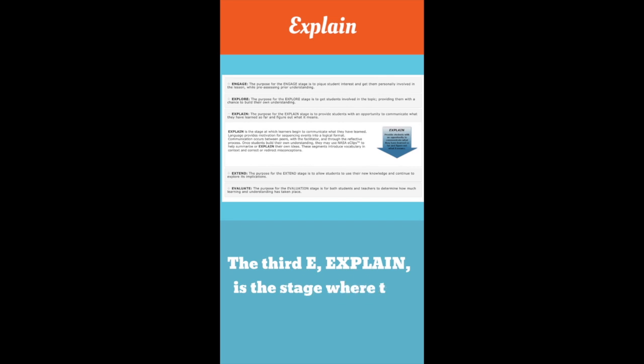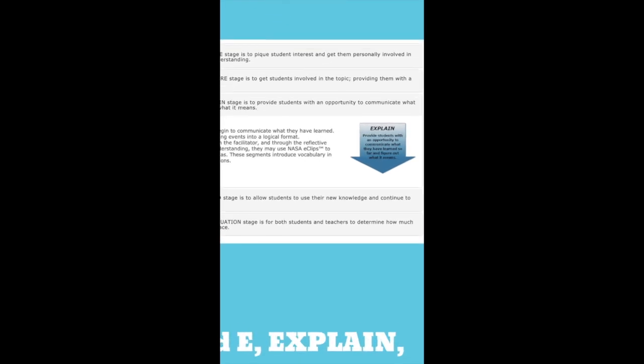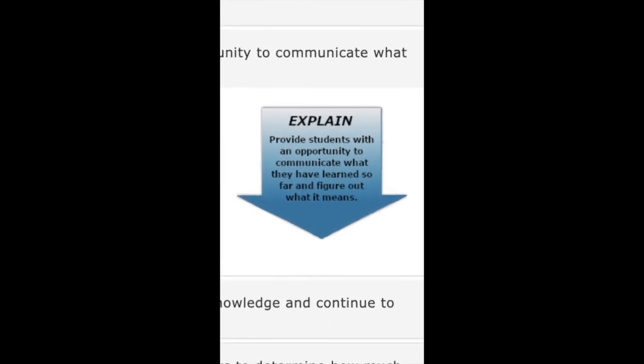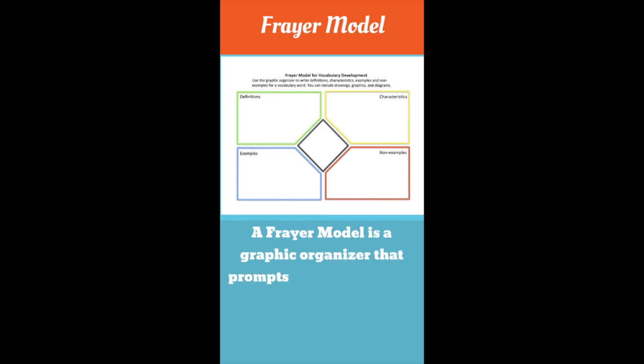The third E, explain, is the stage where the learners communicate what they have learned. The NASA Spotlight lessons use a Frayer model at this stage to help the students organize and analyze the information they have learned about the key vocabulary.